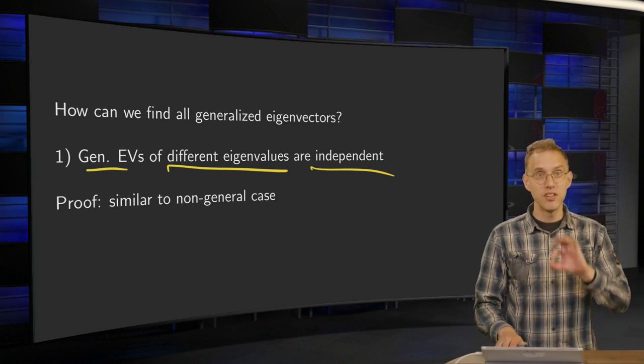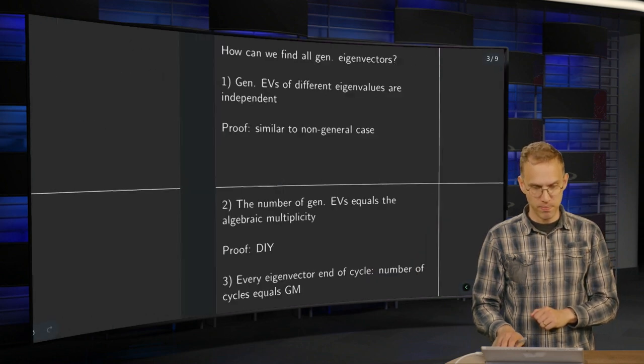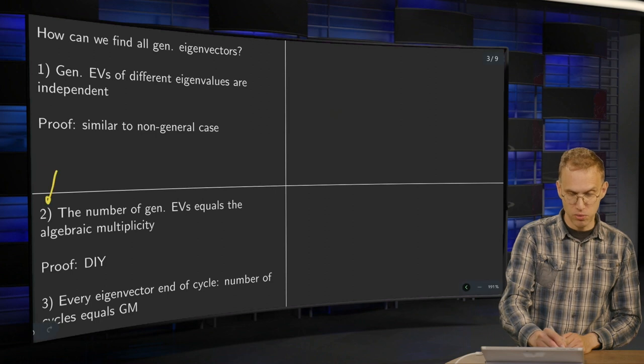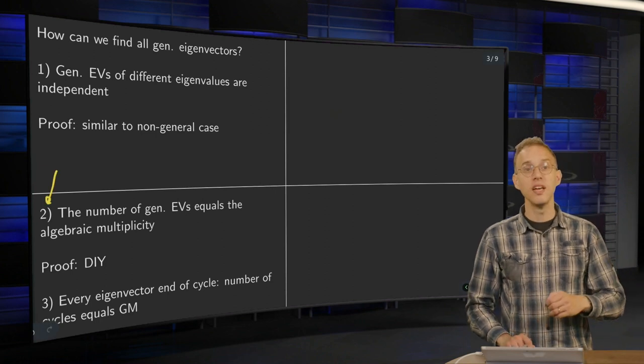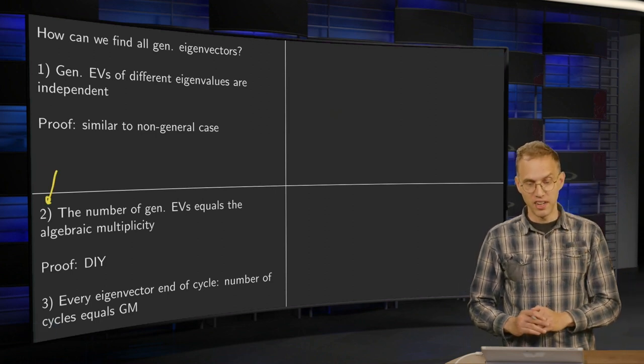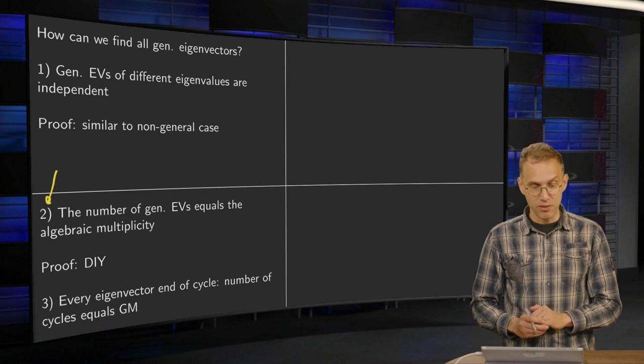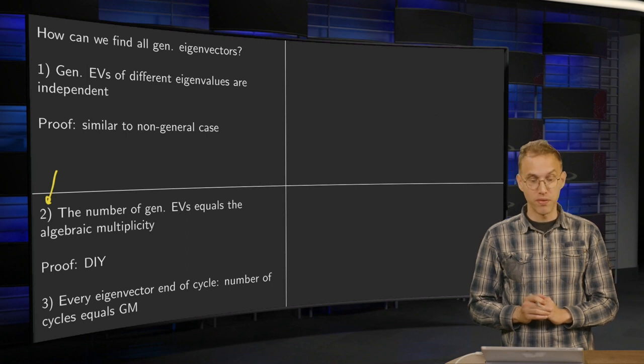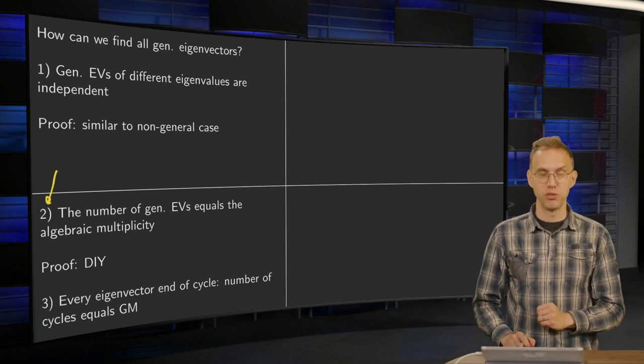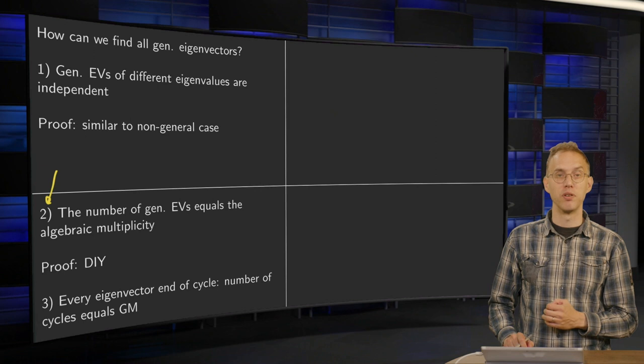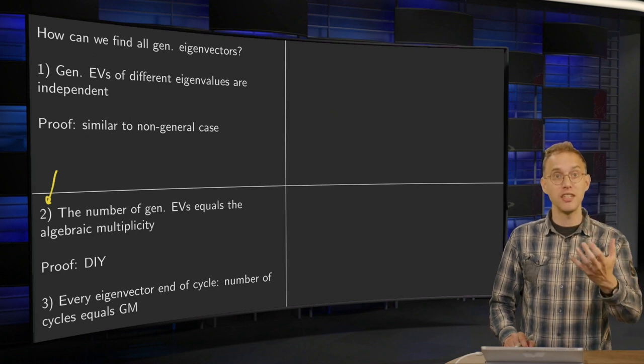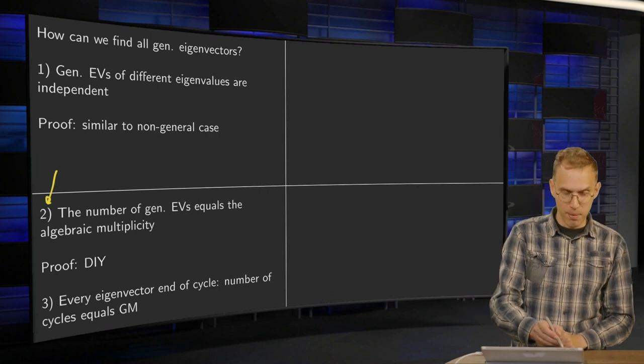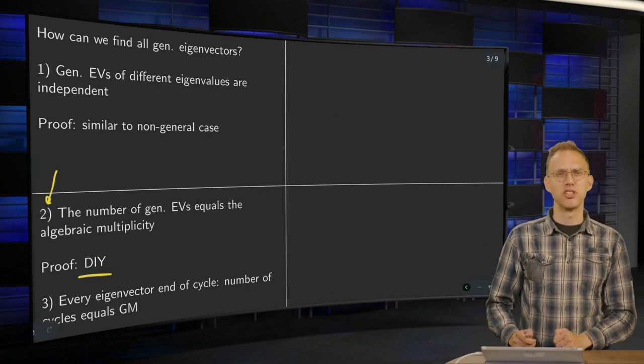So that's good to know. Now this is the relatively easy part. And what's really nasty is this number two, a very important one. The number of generalized eigenvectors equals the algebraic multiplicity, very strong one. Number of independent generalized eigenvectors, I should say, equals the algebraic multiplicity. So that's very nice, because this means we always have enough generalized eigenvectors. I put proof, do it yourself.